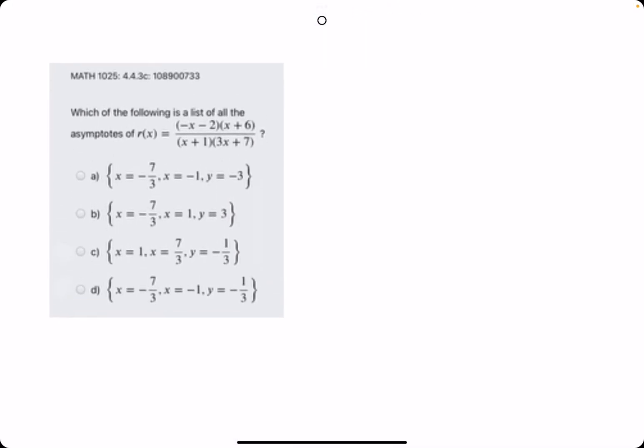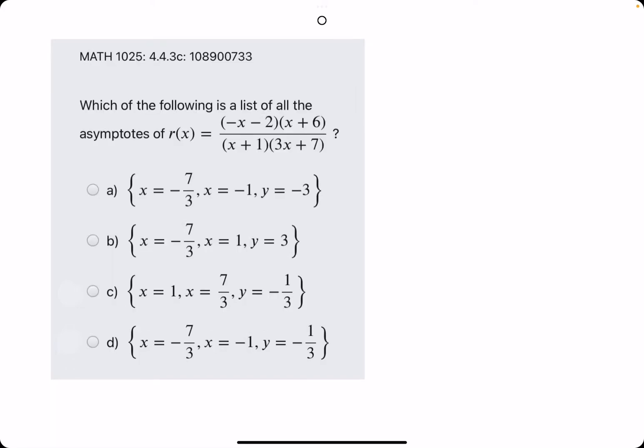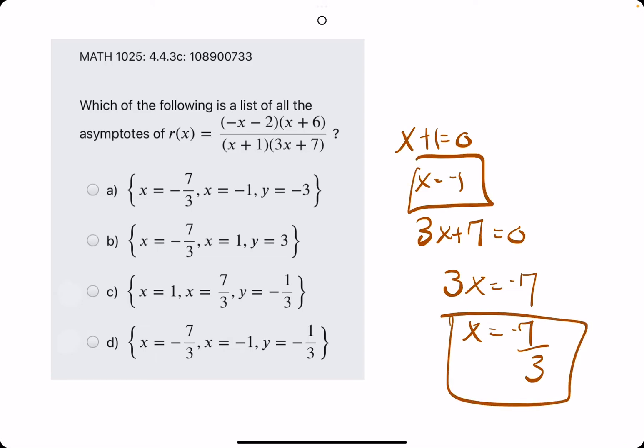All right, let's do one more. Now, x plus one equals zero, so x equals negative one. Three x plus seven equals zero. Three x equals negative seven. X equals negative seven over three. So these are our vertical asymptotes.